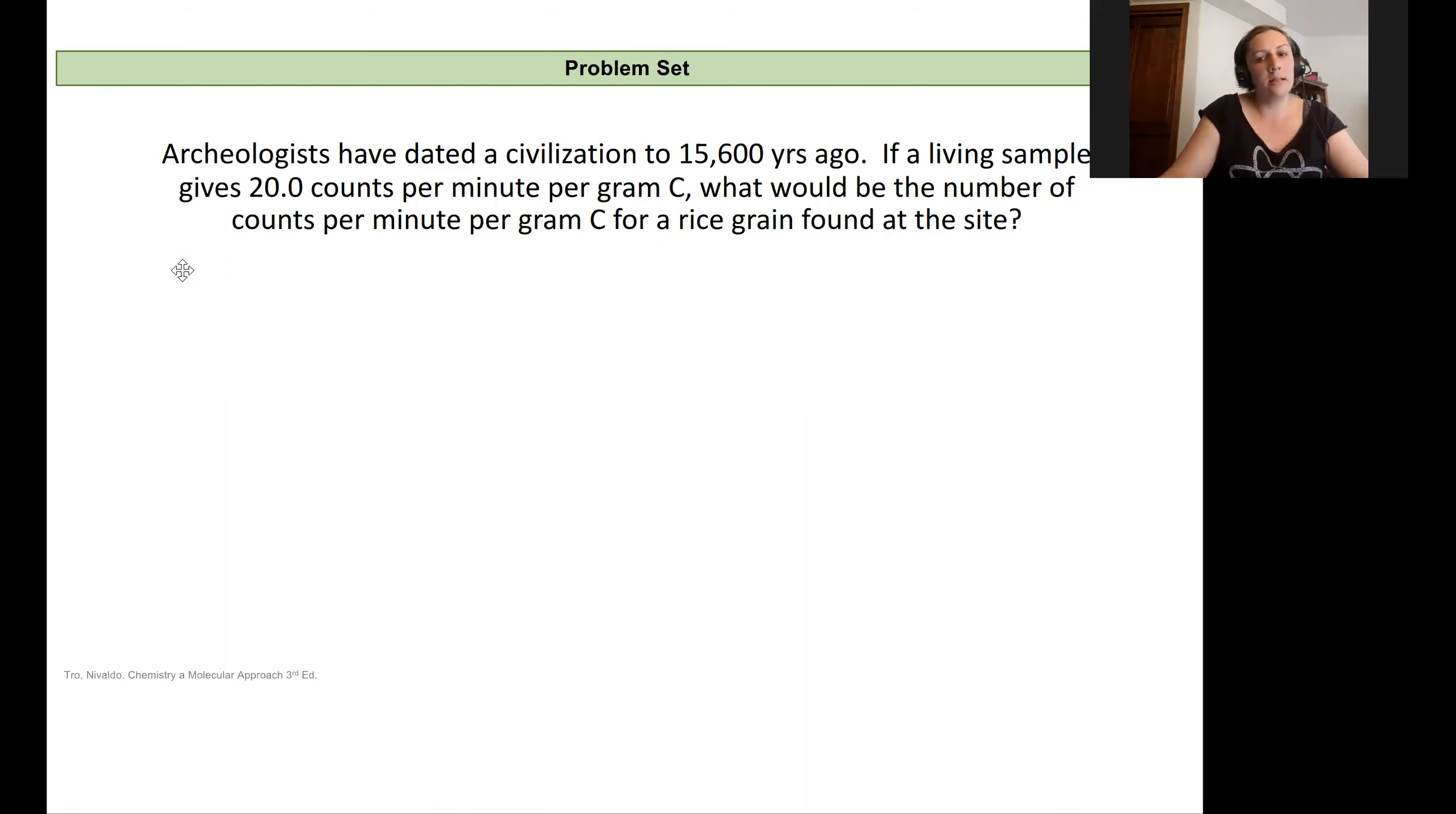And it's looking at another radiometric dating problem. This is looking at something that was 15,600 years ago and looking at a living sample that's giving off radiation at 20 counts per minute per gram of carbon. And so this is instead of disintegrations per minute, counts per minute, which is measuring rate.